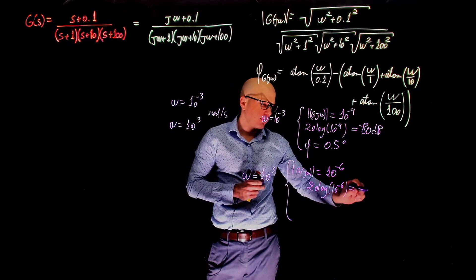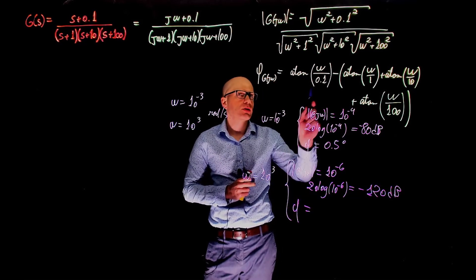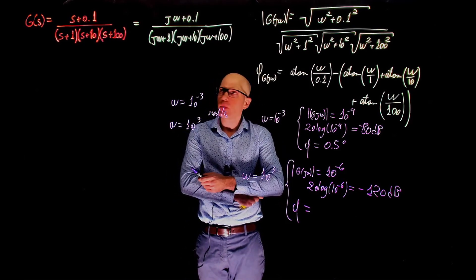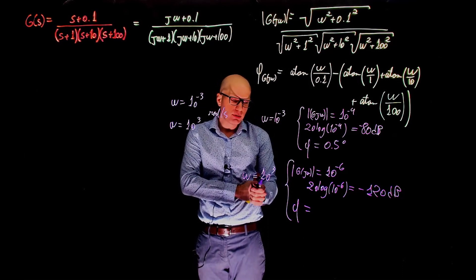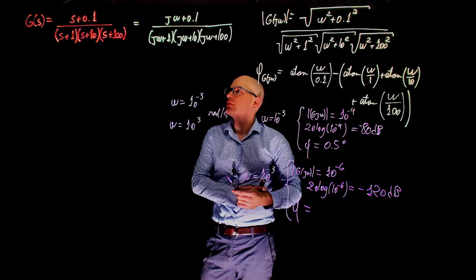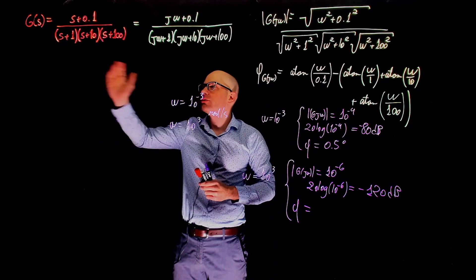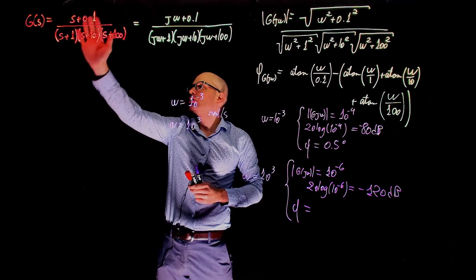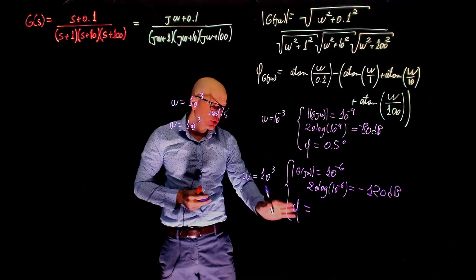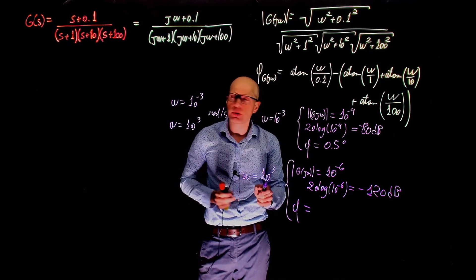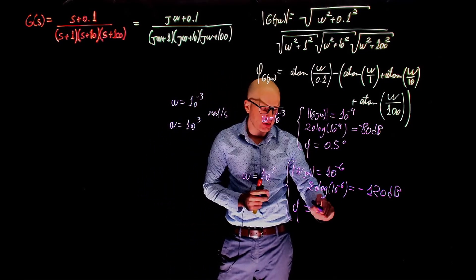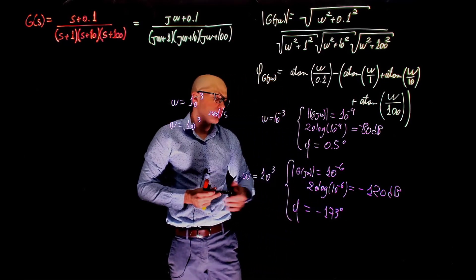For ω = 10³, we get the magnitude of G(jω) as 10⁻⁶, or 20·log(10⁻⁶) = negative 120 dB. Before calculating the phase at 10³, let's look at the transfer function and guess. When the frequency is 10³, we are to the right of all cutoff frequencies. The phase should tend to negative 180 degrees — because a zero and a pole cancel out, leaving two poles, each contributing negative 90 degrees. The actual calculated value is negative 173 degrees, which confirms our result is probably correct.